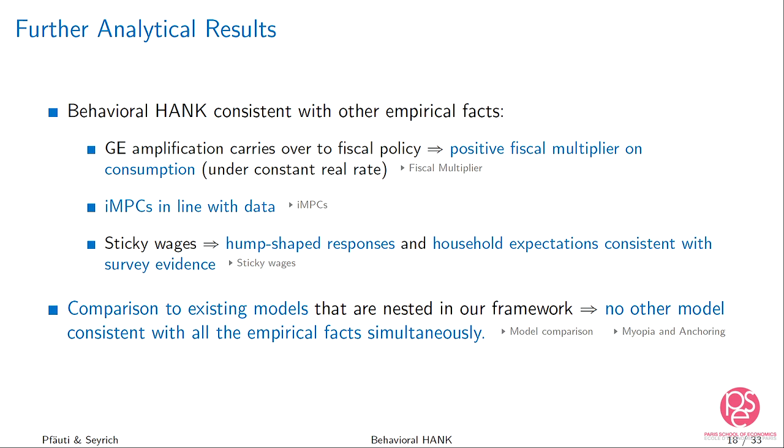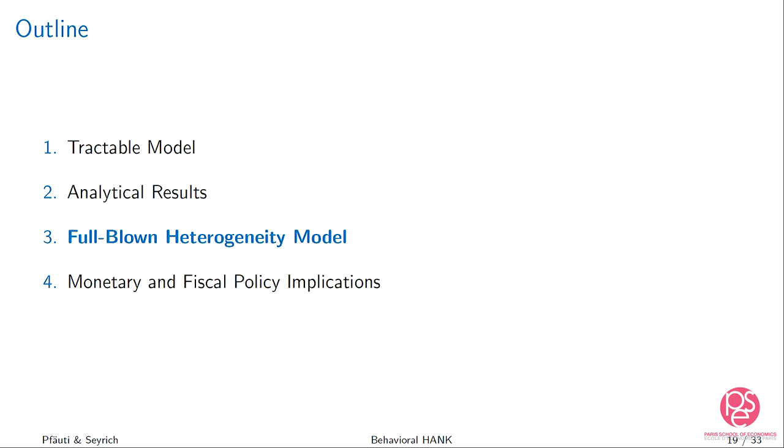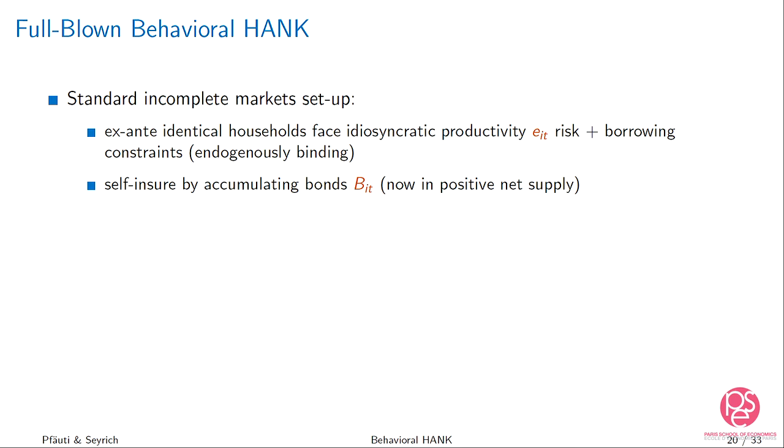Depending on which frictions we turn off, we can nest the textbook model, models with household heterogeneity, and models that deviate from full information rational expectations. Now let's move to the full HANK model. Instead of the limited heterogeneity setup, think of this as a standard incomplete market setup: ex-ante identical households facing idiosyncratic productivity risk, endogenously binding borrowing constraints, and self-insurance by accumulating bonds.